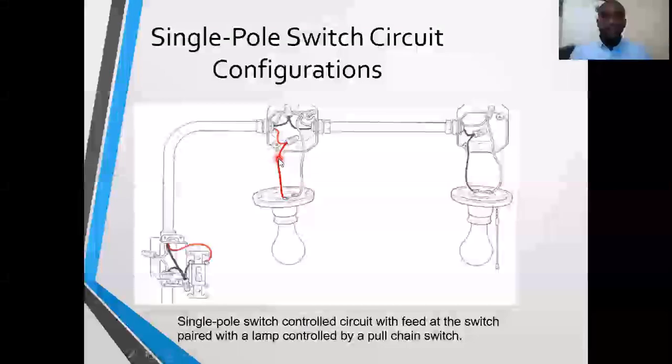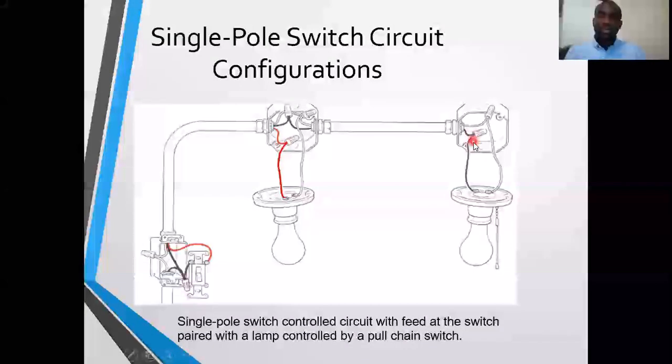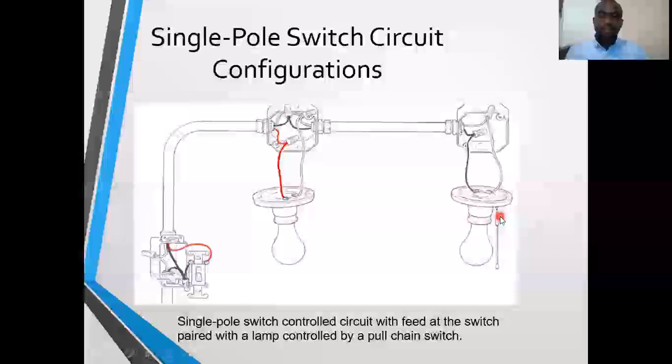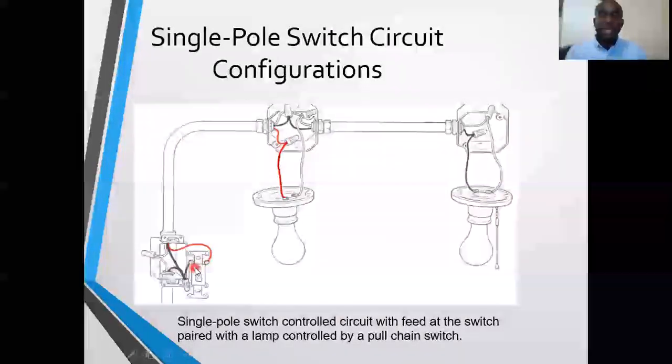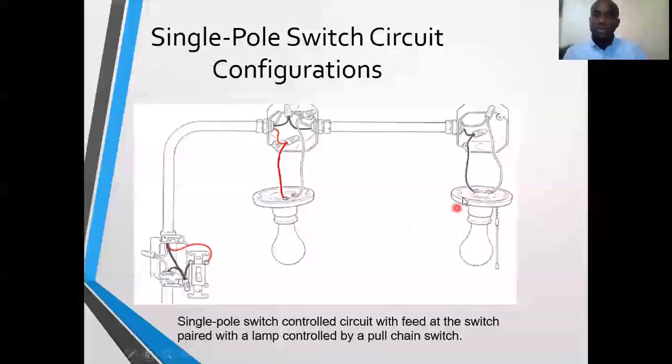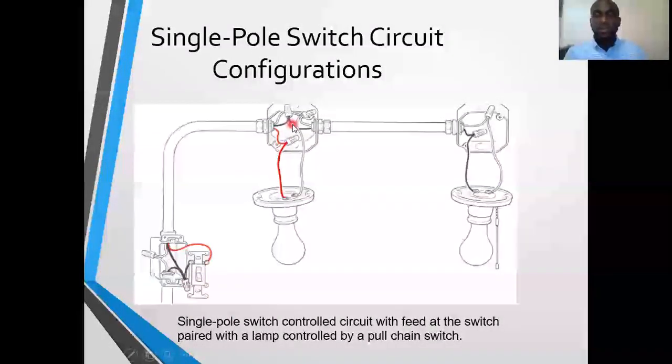If you had made the mistake, as many do, to splice the switch feed and send it along to the secondary lamp, this single pole switch would override this pull chain switch, and this lamp would only be controlled whenever the single pole switch is turned on. So no current would get to this lamp if you share the switch feed as opposed to sharing the main source hot.